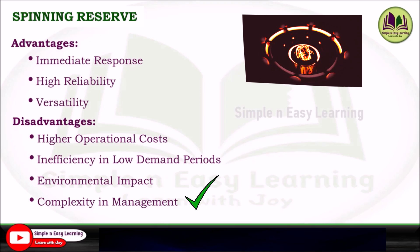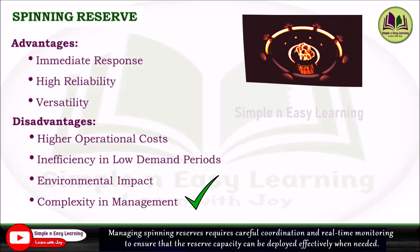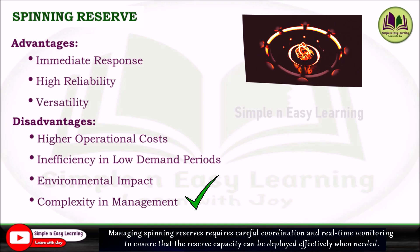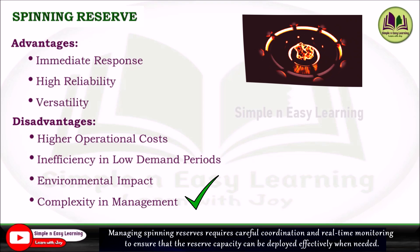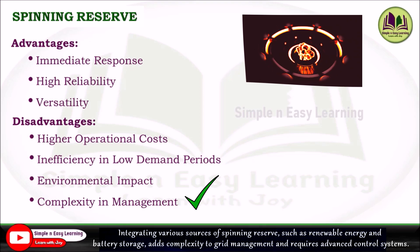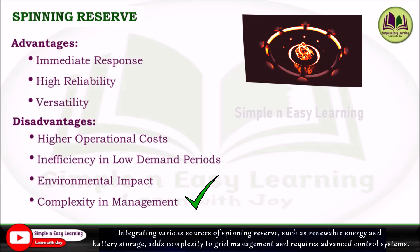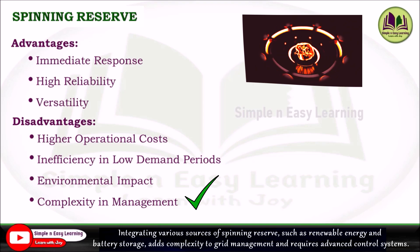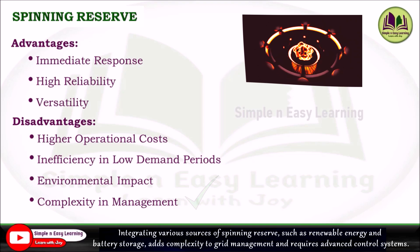The fourth disadvantage is complexity in management. Managing spinning reserves requires careful coordination and real-time monitoring to ensure that the reserve capacity can be deployed effectively when needed. Integrating various sources of spinning reserve, such as renewable energy and battery storage, adds complexity to grid management and requires advanced control systems.